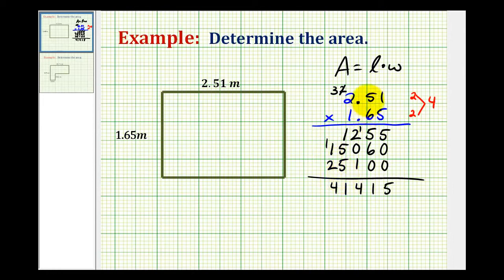So again if we ignore the decimals, the decimal point would be right here currently. But now since we have to have 4 decimal places in our product, we're going to move the decimal 4 places to the left. So 1, 2, 3, 4.